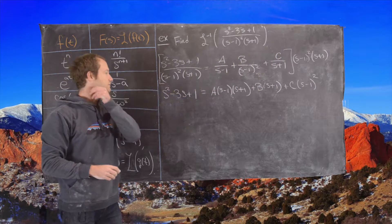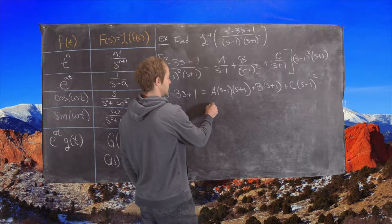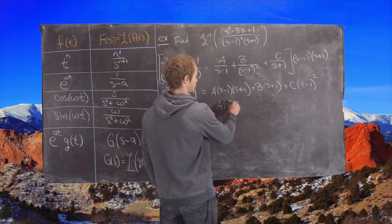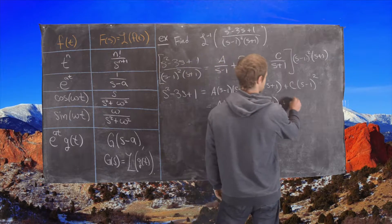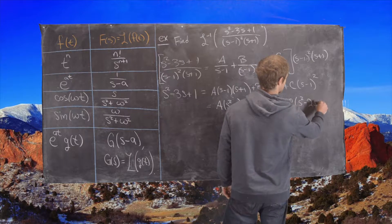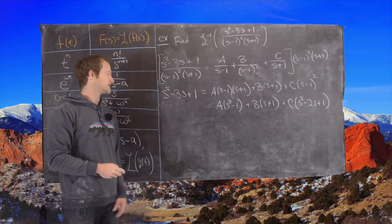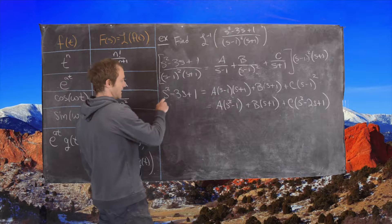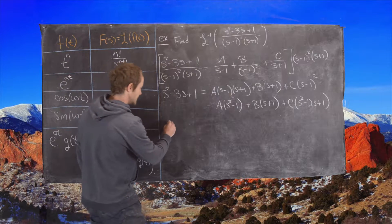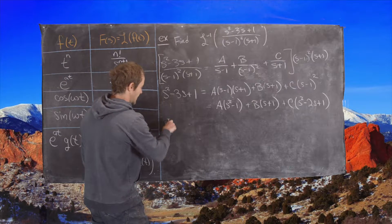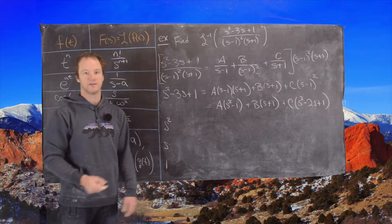Plus B times s plus 1, plus C times s minus 1 squared. Now let's multiply out the right-hand side: A times s squared minus 1, plus B times s plus 1, plus C times s squared minus 2s plus 1. The next step is to skip straight to the system of equations. We have up to s squared on both sides, so we'll get three equations from coefficients of s squared, s, and the constant.